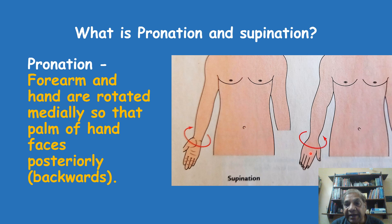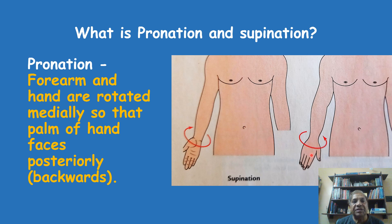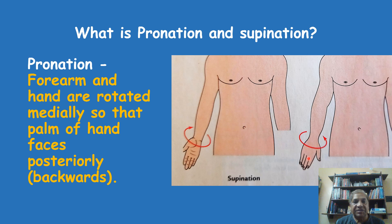So both the hand and forearm have rotated towards the medial side, as the red arrow indicates the medial rotation of the forearm and the hand. This movement is called pronation. The forearm and hand are rotated medially so that the palm of the hand faces posteriorly and the back of the forearm faces anteriorly. That movement from the position of supination is the pronation movement.